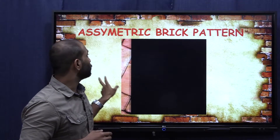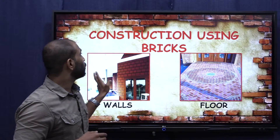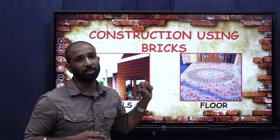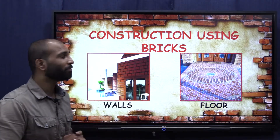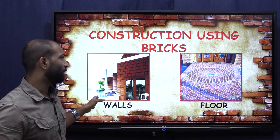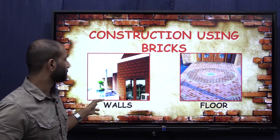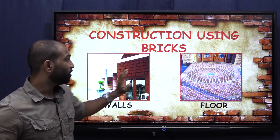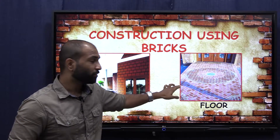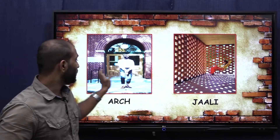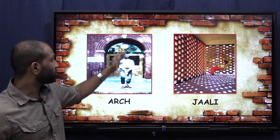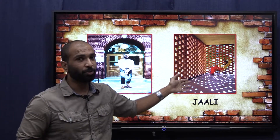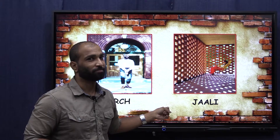We are moving to the constructions using bricks. These are some examples of construction with bricks — walls, floors, and art. This is Jali, which is a window kind of structure.